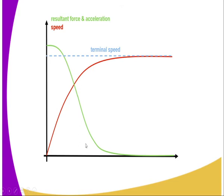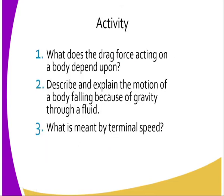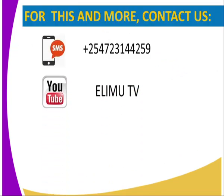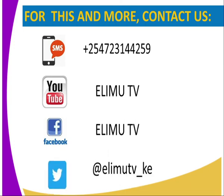Let's check whether we've understood the goals of this lesson. Number one: what does the drag force acting on a body depend on? Number two: describe and explain the motion of a body falling through a fluid due to gravity. Number three: what is meant by terminal speed or terminal velocity? You can refer to the Secondary Physics Students Book Three, fourth edition, or send us a text, visit our YouTube or Facebook page at Elimu TV, or send us a tweet. Once again, I'm your tutor Mr. Mangi — stay tuned for more lessons to come.